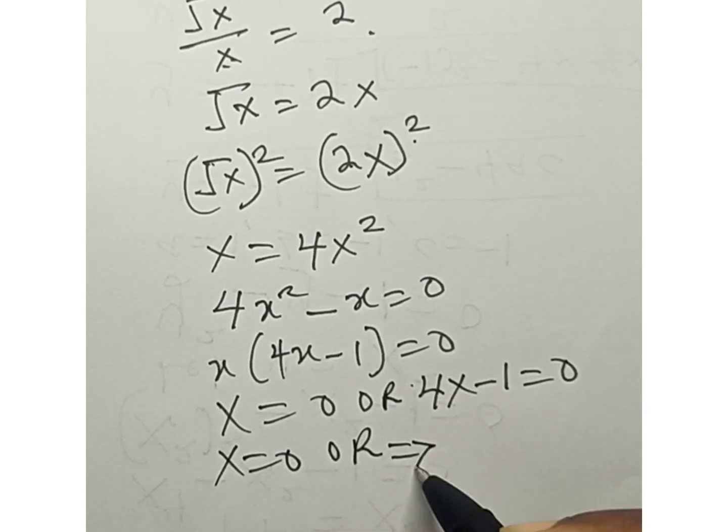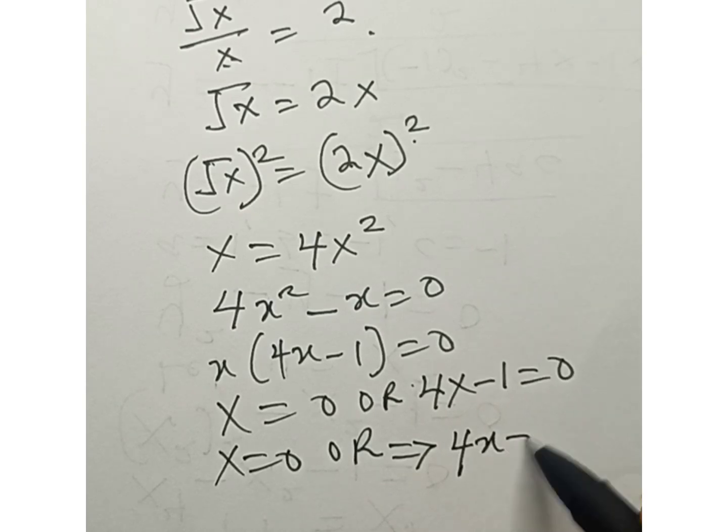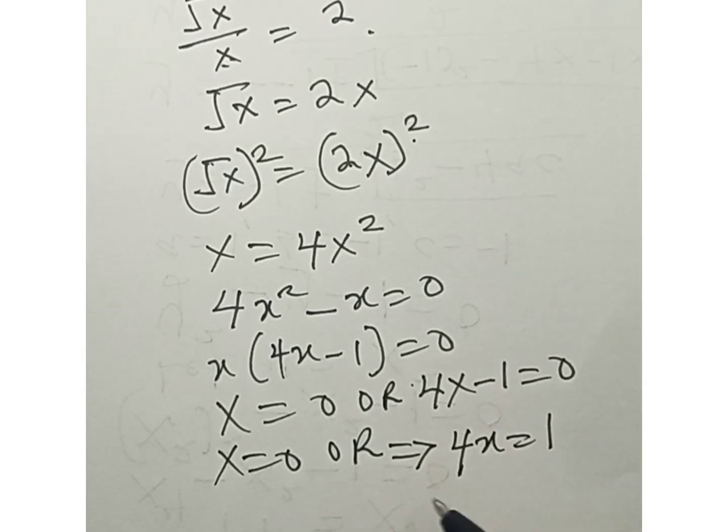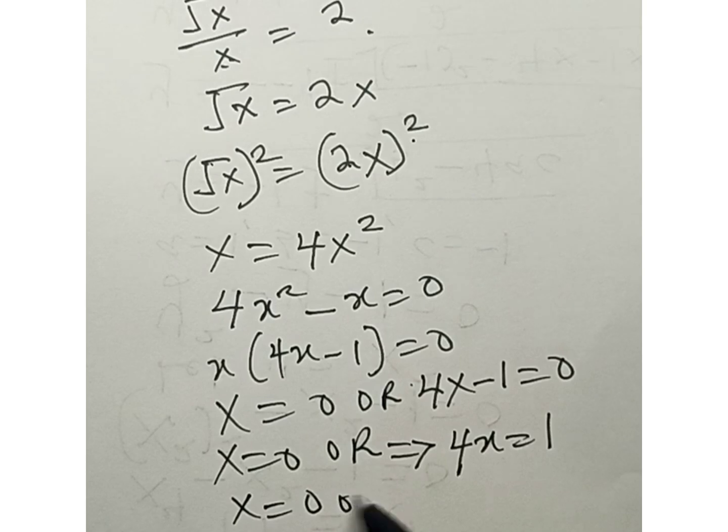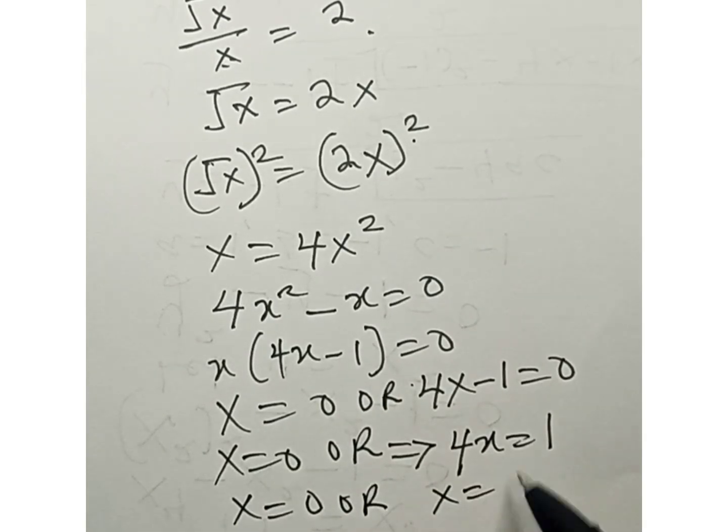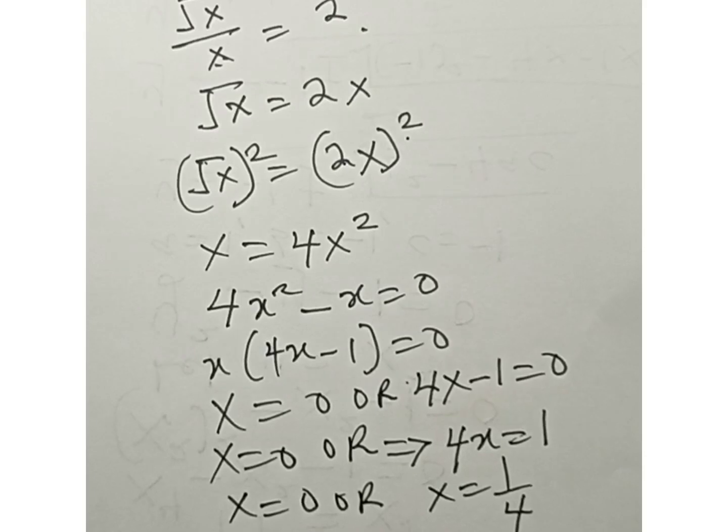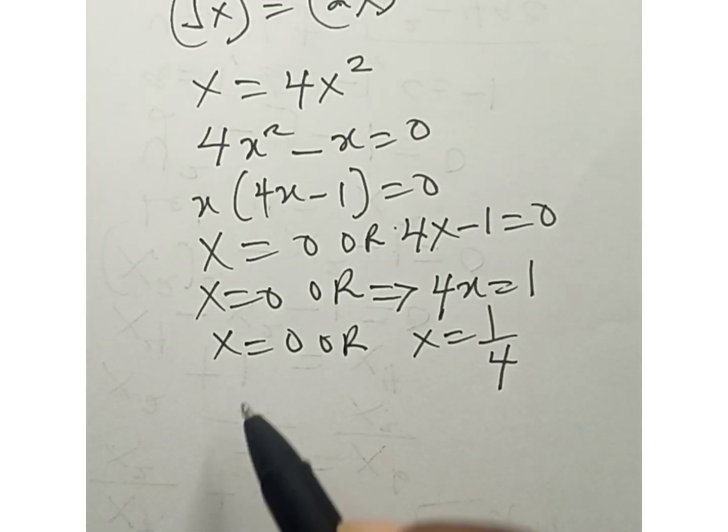1 over 4. x equals to 1/4. Let us check if our answers are correct. We have to